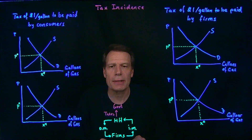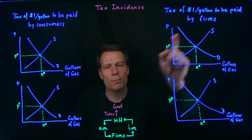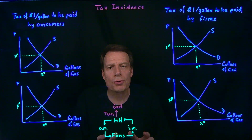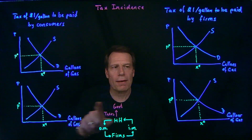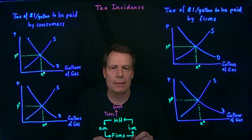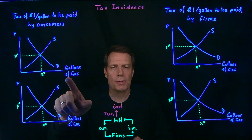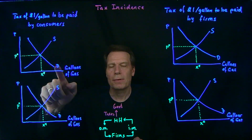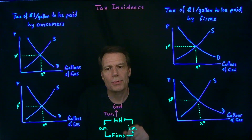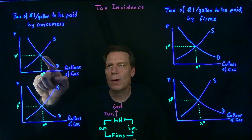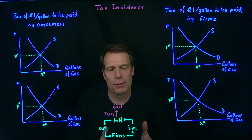In one case, consumers are legally obligated; in the other case, firms are legally obligated. But we want to think about the economic impact of those two ways of writing tax laws. Here we have four graphs that are identical, each showing the gasoline market prior to the imposition of a tax. We have gallons of gasoline on the horizontal axis, price per gallon on the vertical axis, a demand curve emerging from households, and a supply curve emerging from firms. We have an equilibrium price and quantity determined by the intersection of supply and demand.